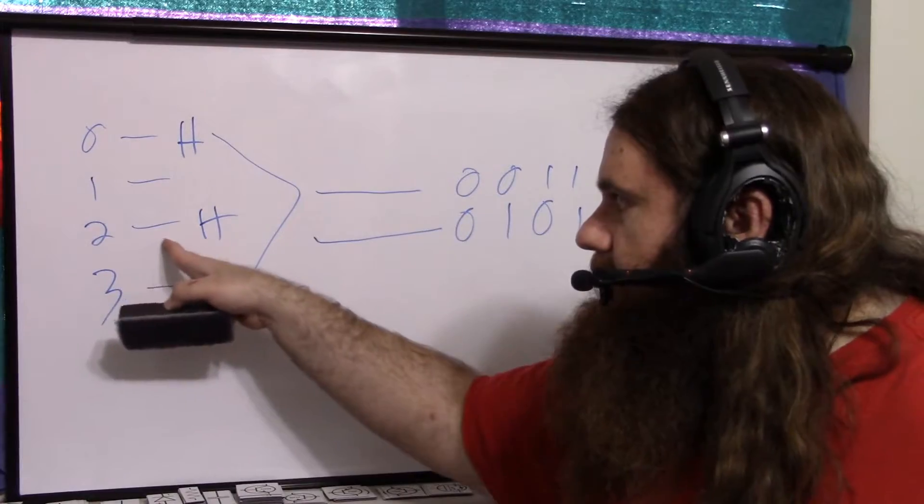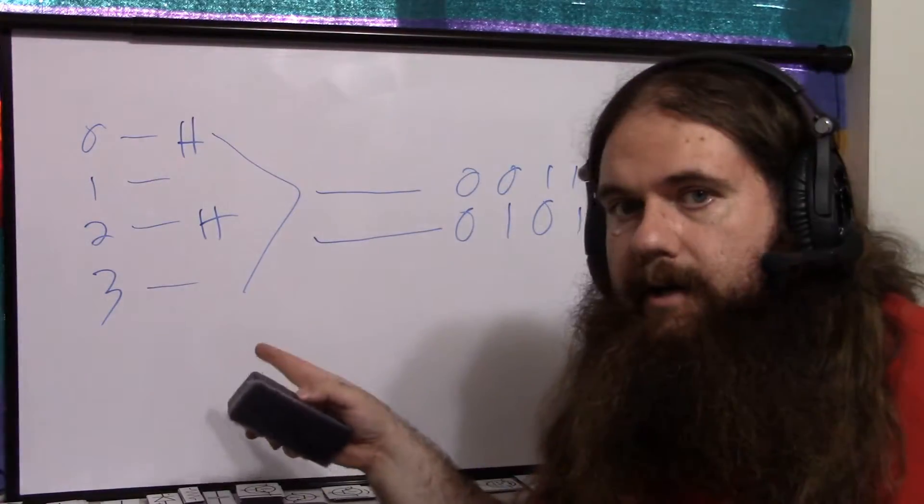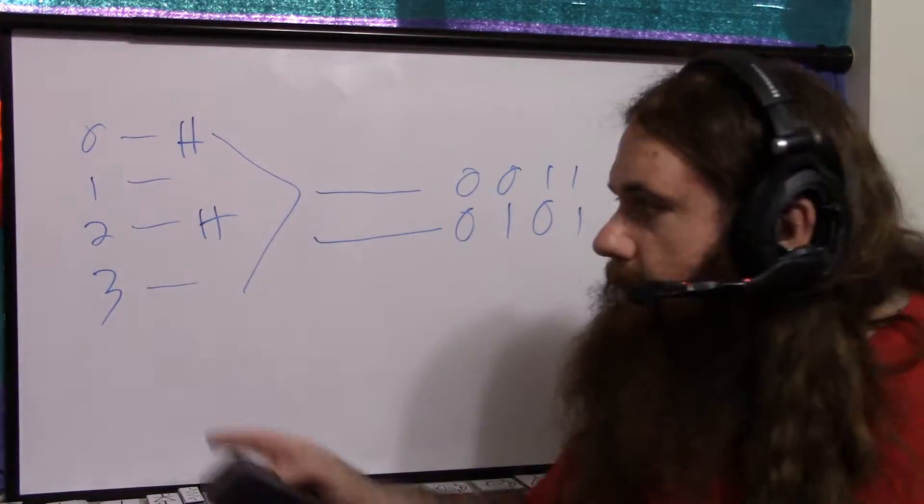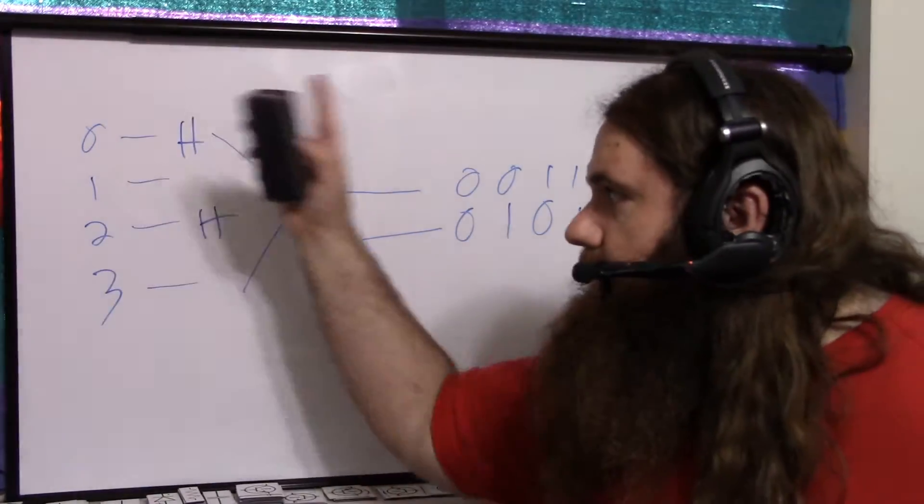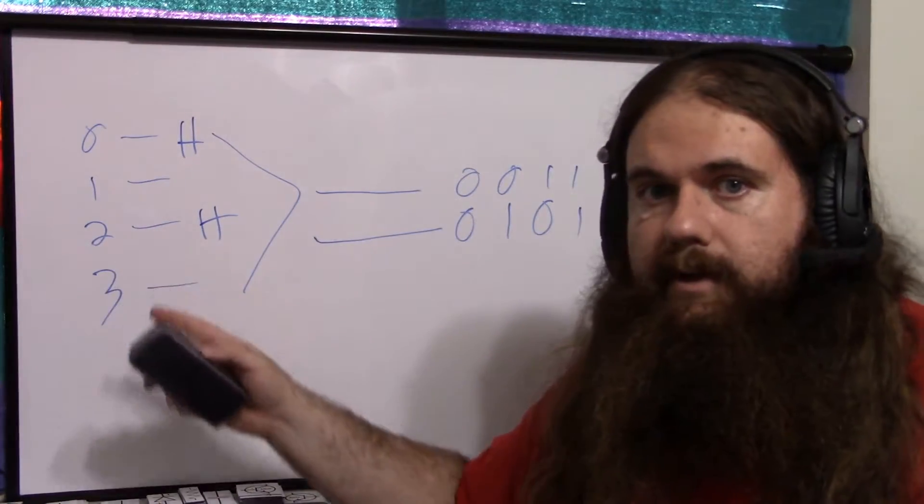So if, let's say this one has a higher priority, let's say 3, 2, 1, 0 is high to low priority. 2 is high, so it's going to send a 2. It doesn't care if 0 is on. You know, 2 might be the timer and 0 might be the USB port. The USB port can wait. The timer is more important. That kind of thing.